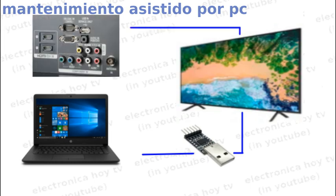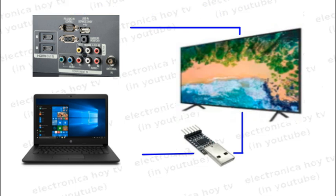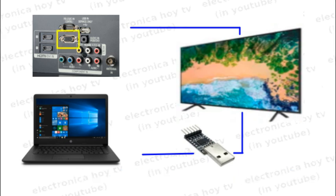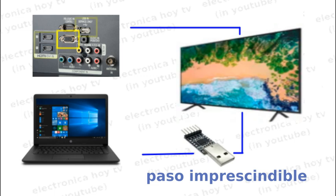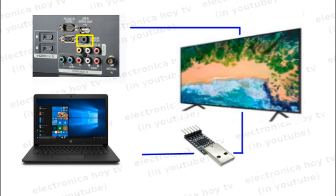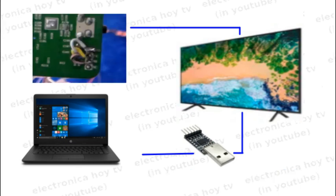En el televisor, y más específicamente en la tarjeta MAIN, deberemos ubicar los mismos puntos de comunicación TX, RX y Tierra con que cuenta nuestro dispositivo de interfase. Estos puntos pueden estar en el puerto VGA, en algún puerto USB o HDMI, en un terminal de 3.5 como los de audio, o incluso como puntos libres dentro del impreso de la tarjeta.